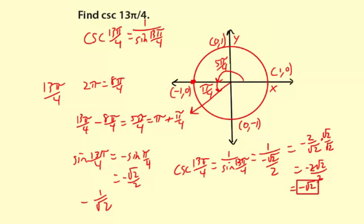This question combines all kinds of trigonometric knowledge: coterminal angles, reference angles, the unit circle, the reciprocal of a trig ratio, radians, and rationalizing denominators. There's a lot going on here. But it's a lot of steps without being that complicated — you just have to take it one step at a time. Follow through on the process and you should have good success.